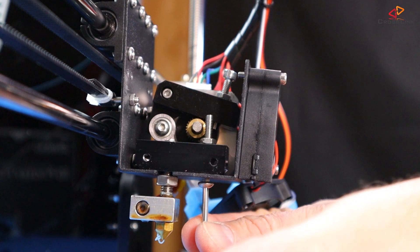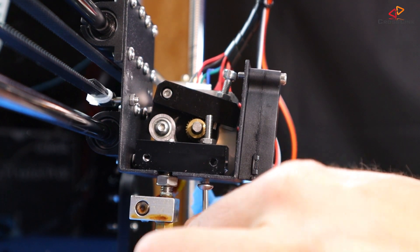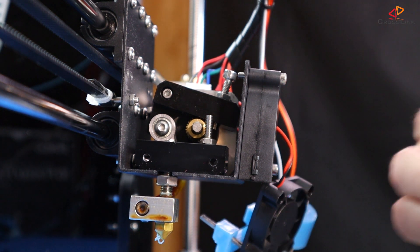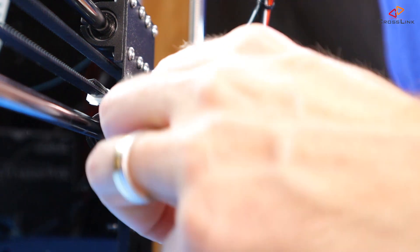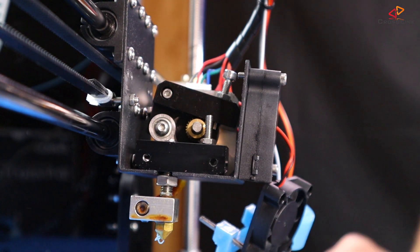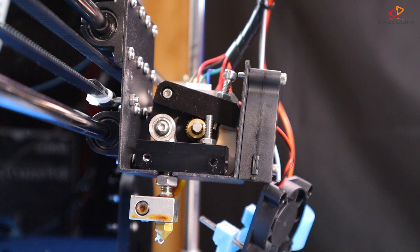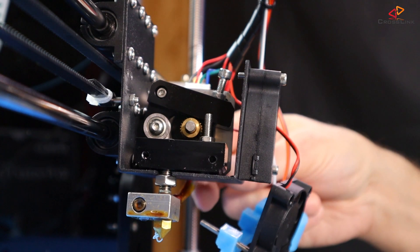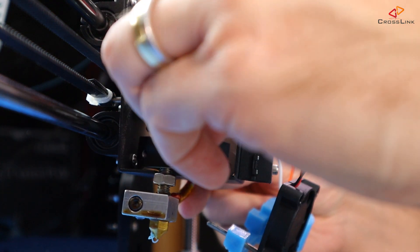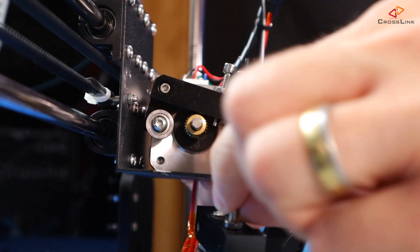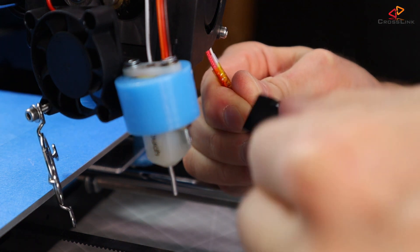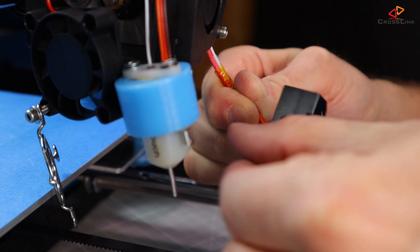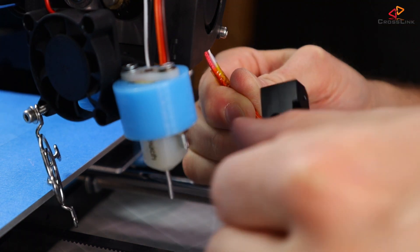So after removing the extruder fan and cooling block, remove the screw that holds the whole extruder in place with a hex wrench from the bottom of the slider that's moving the x-axis. Now when everything is loose, you can take off the extruder block from the throat that goes into the nozzle.